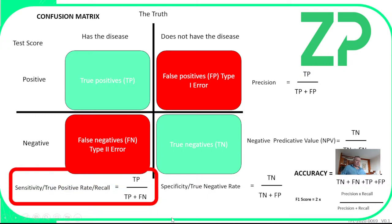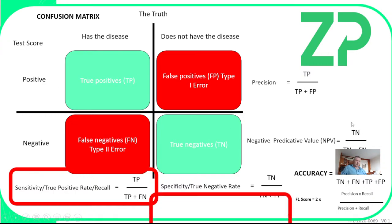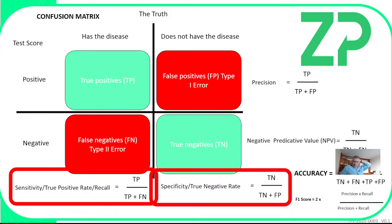From the confusion matrix, you can take the number of true positives divided by the sum of true positives and false negatives — that gives you your sensitivity. Sensitivity is number of true positives over true positives plus false negatives. Specificity is how many true negatives over the sum of true negatives plus false positives.